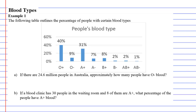Blood types example one. The following table outlines the percentage of people with certain blood types. We can see here 40% of people are O positive, 8% of people are AB positive, and so on.